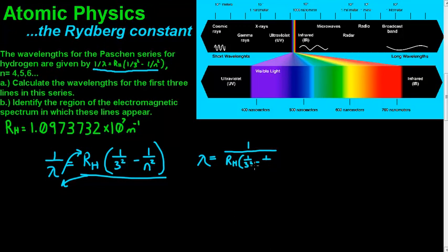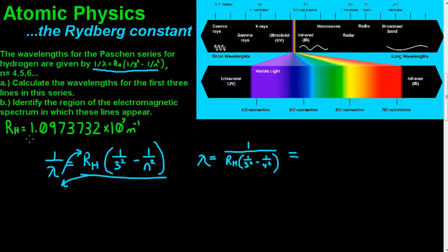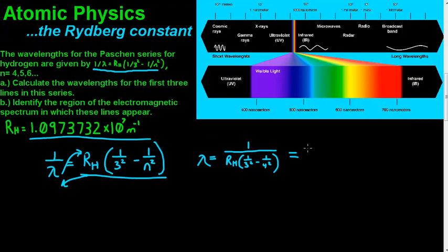Since we are doing 4, we'll start there, so we'll say 1 minus 4 squared. When we do that, we've got 1 over the Rh, which is the constant we are using, and then we've got 1 over 3 squared minus 1 over 4 squared, and it comes out to be 1,874.6 nanometers. So that's the first wavelength.